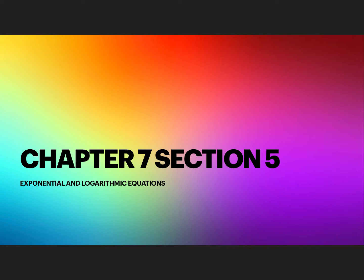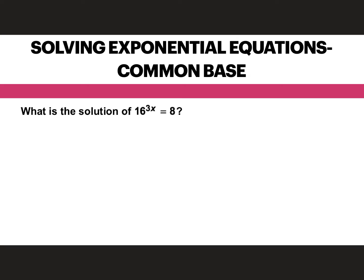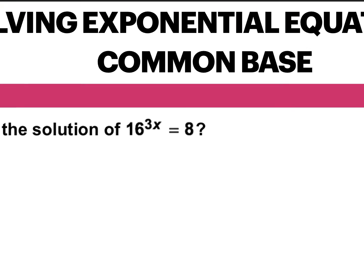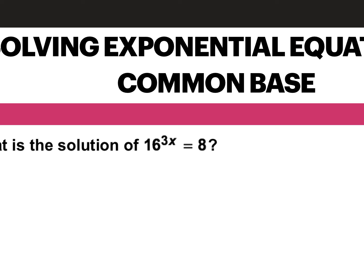7.5 is the last section from chapter 7. We're going to continue with exponential and logarithmic equations, solving for x. Solving exponential equations with a common base — we want both sides to have a common base. So it could be like 2 to some power equals 2 to some power, or 5 to some power equals 5 to some power. We want that base to be the same — that's our goal.